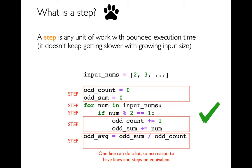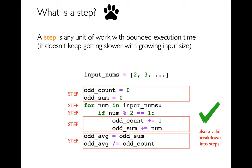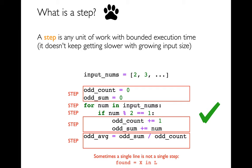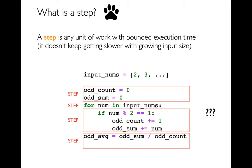The flip side is also true. Consider 'found = x in l'. Even though as a programmer you're not writing any loop, the Python interpreter handles this by looping over everything in l, checking if x equals each item. So even though it's one line of code, it's actually multiple steps — as l gets bigger it takes longer to run. You can't count that as a single step.